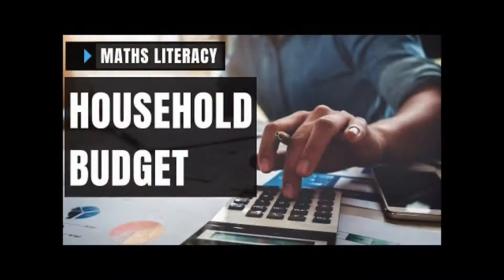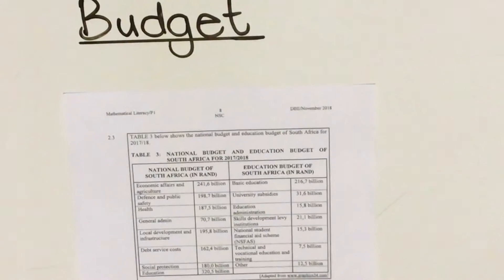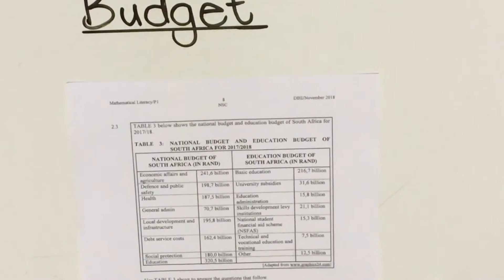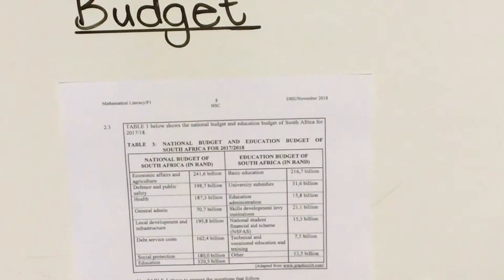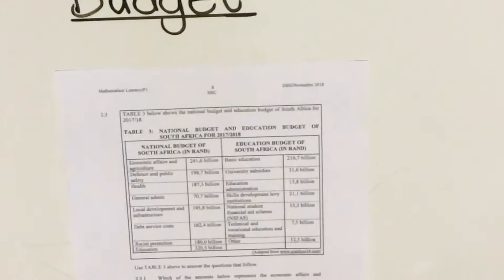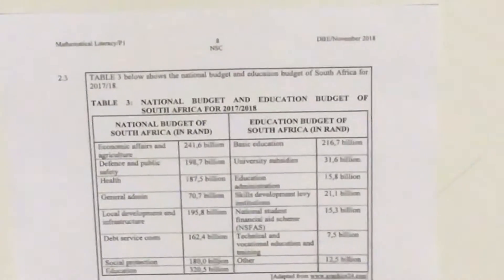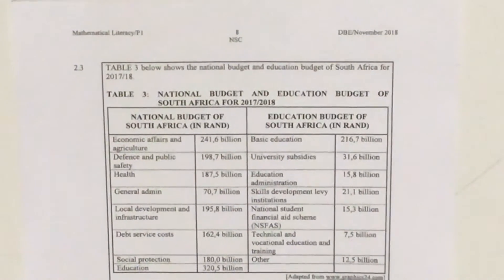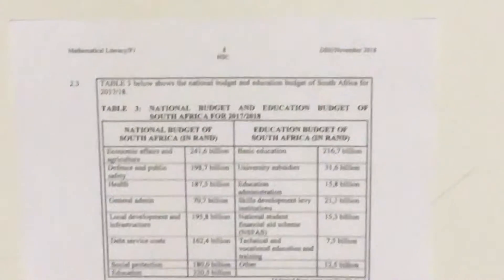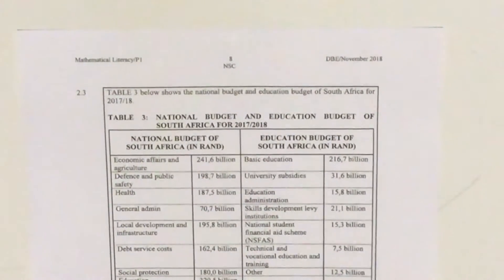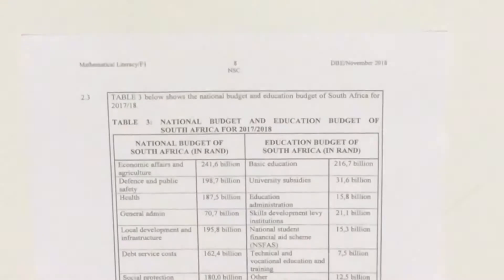Hello everyone. In our last video we did a budget on a family income household budget. This one is a question paper — 2018 November, paper one. They were doing the national budget and education. We're going to look at this from the year 2017-2018, look at the budget, then look at the questions, and I'm going to help you how to answer these questions.